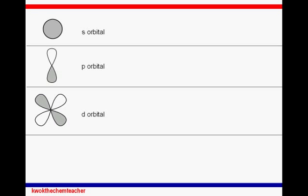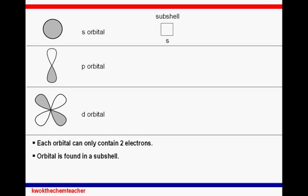There are three types of orbitals that we focus on in the GCE A-level curriculum. They are the S, P, and D orbitals. Each orbital contains only two electrons. The orbital is found in the subshell, so for the S orbital, it's found in the S subshell, and there's only one S subshell.